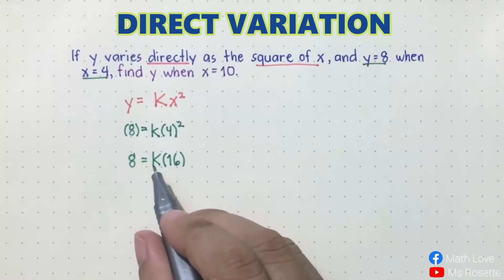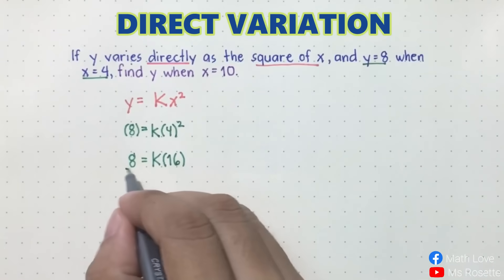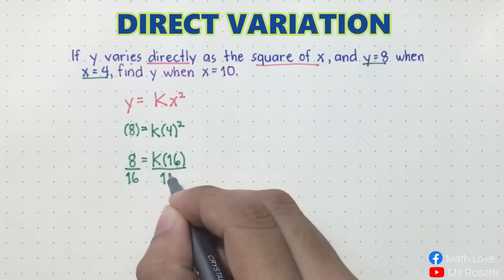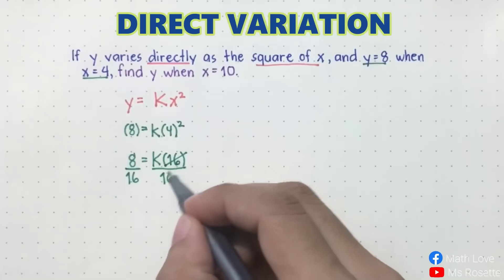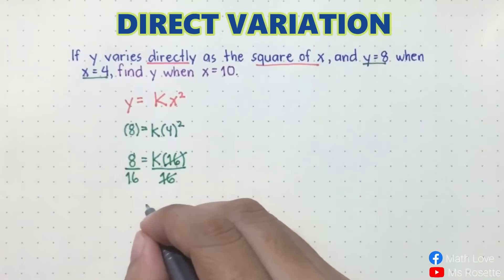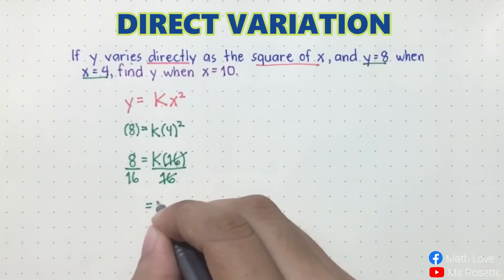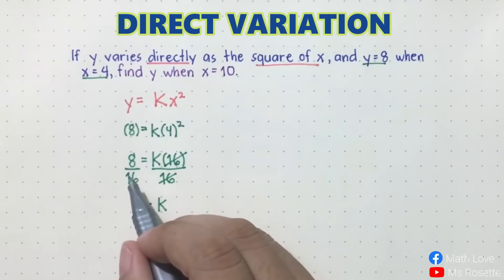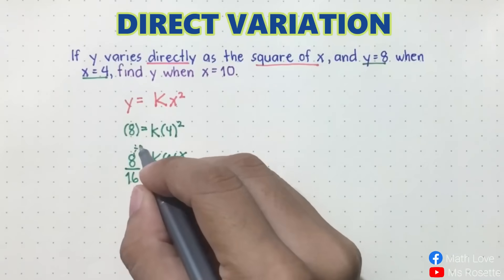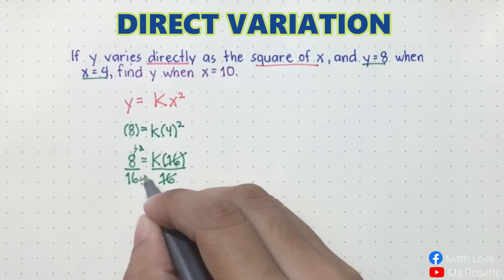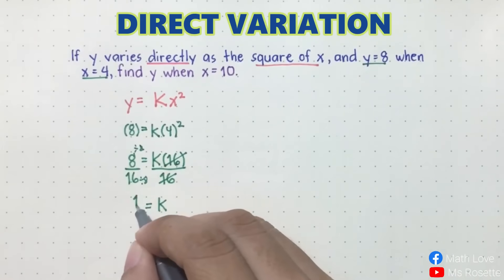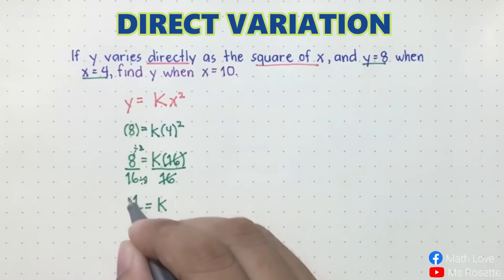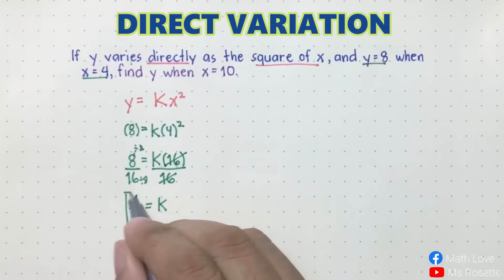Now solve for k by dividing both sides by 16 to cancel. So cancel 16, and we only have k on this side. 8 over 16 — simplify by dividing both by 8. 8 divided by 8 is 1, and 16 divided by 8 is 2. So the constant is equal to 1 half.